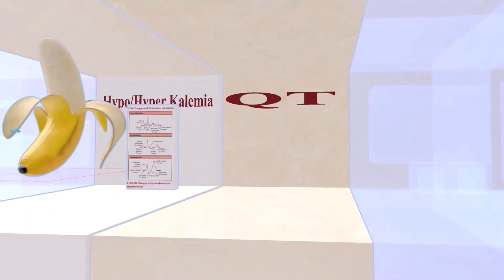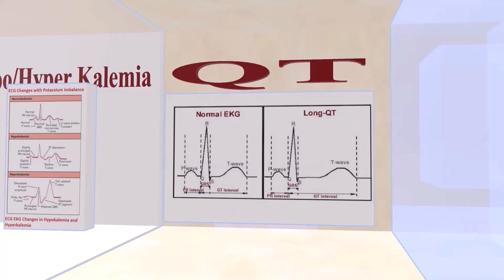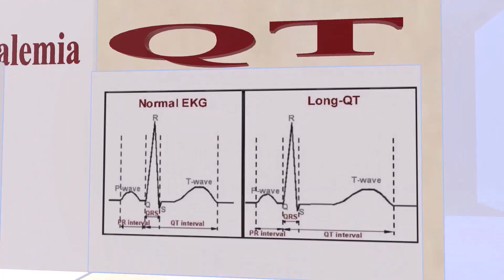Our next room is about the prolonged QT interval — the QT letters here are very prolonged. There are many causes of prolonged QT, including fluoroquinolones, antipsychotics, antidepressants, antiemetics, antifungals, protease inhibitors, opioids, antiarrhythmics, arsenic, and macrolides.